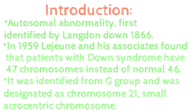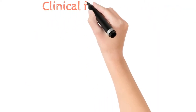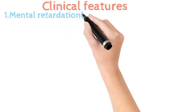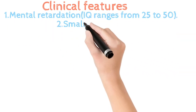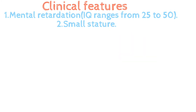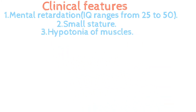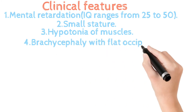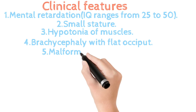This extra chromosome was identified to belong to the G group and was designated as the 21st chromosome. It is a small acrocentric chromosome. Now let's see how a baby with Down syndrome presents. Clinical features include mental retardation with an IQ range of 25 to 50, small stature, and hypotonia of muscles, i.e. decreased tone of muscles. Let's remember the features from head to toe.